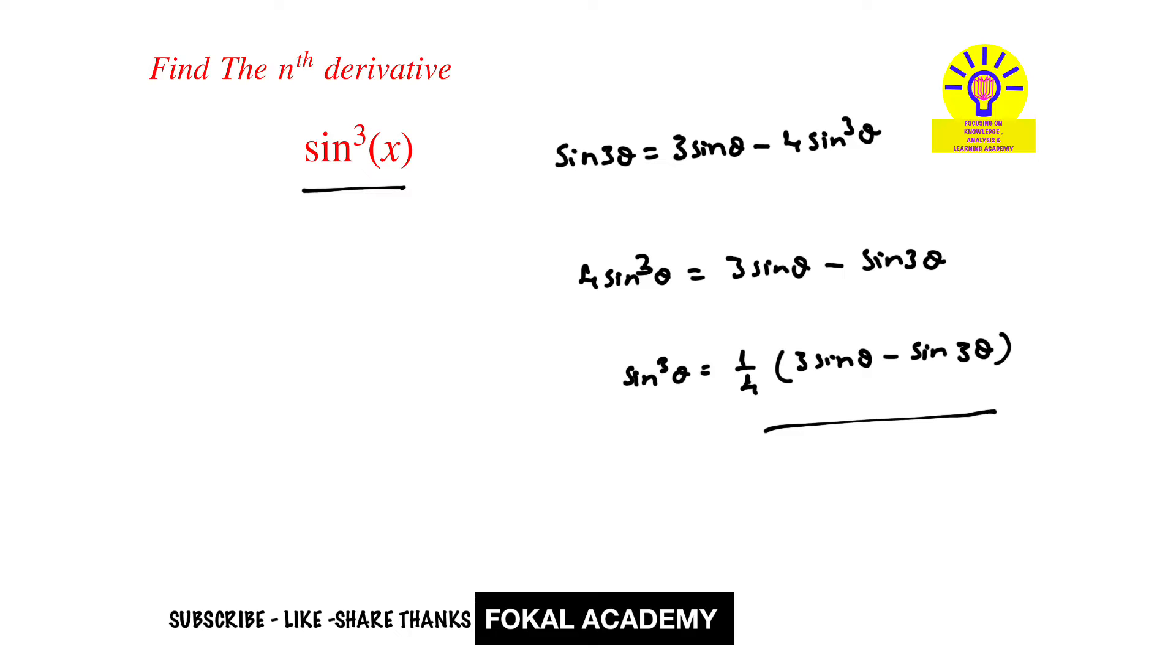Now we can write sin cube x as like this. Now convert this equation in terms of x, so then it becomes 1 by 4 times 3 into sin x minus sin 3x. So it is equal to sin cube of x.